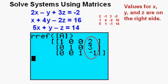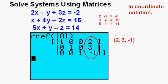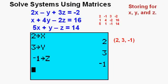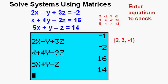This is where we see the coordinates for x, y, and z on the right side. So we can write this in coordinate notation as 2 comma 3 comma negative 1. So x is 2, y is 3, z is negative 1. And again as we did earlier we can store the coordinate numbers for x, y, and z as shown here. Then we can enter the equations and see what we get. And we see that this solution satisfies all three equations and is correct.